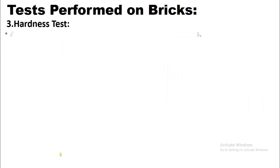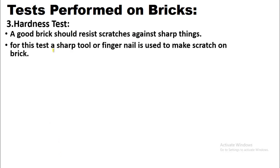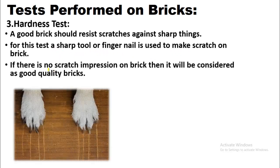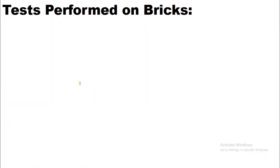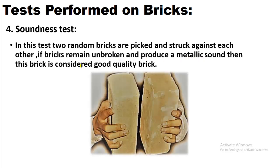The third test is the hardness test. A good brick should resist scratches against sharp things. A sharp tool or fingernail is used to make a scratch on the brick — if there is no scratch impression, it is considered good quality. The fourth test is the soundness test: two random bricks are picked and struck against each other. If the bricks remain unbroken and produce a metallic sound, they are considered good quality. This test can be performed on site.